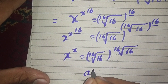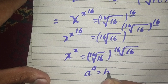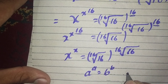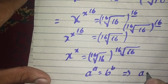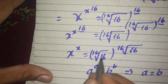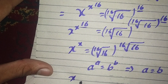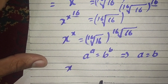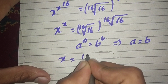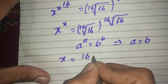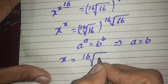We have the rule: if A power A power A power A power B implies A is equal to B. So here we can compare the bases. We get x is equal to the 16th root of 16.